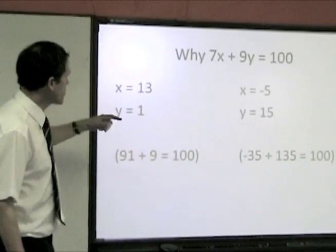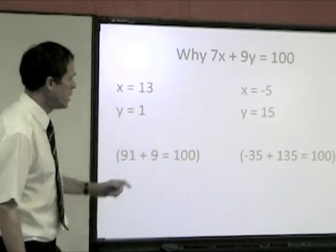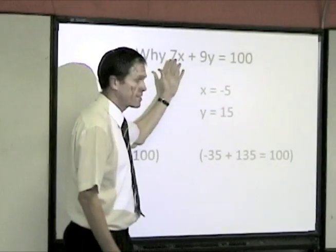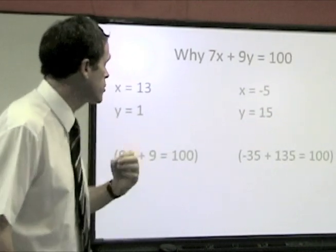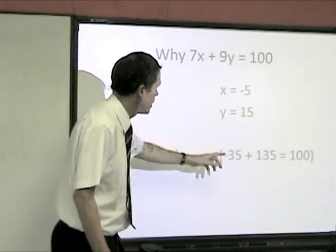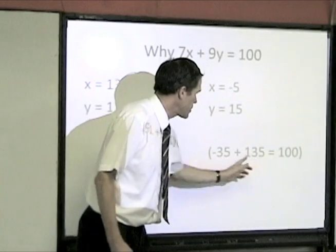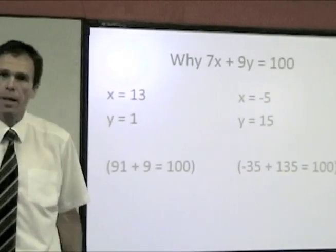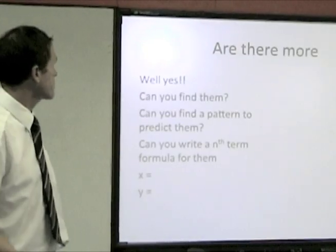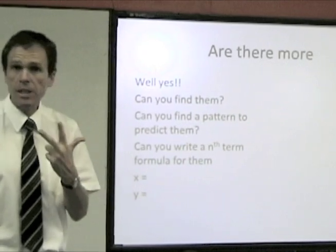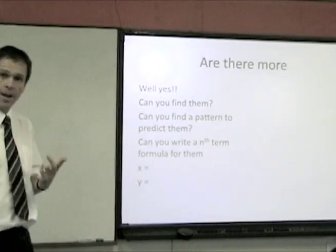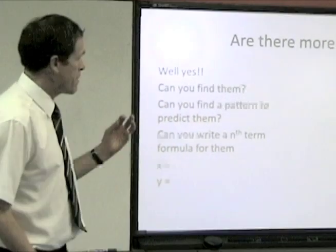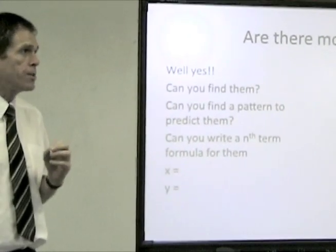So you can see that x equals 13 and y equals 1, and also x equals minus 5 and y equals 15 are where 7x plus 9y is equal to 100. And we can find these solutions by looking at these multiples here. Multiple of 7 and multiple of 9 which add together to make 100. Are there more? Well we've found 3 so far. And there are more. Can you find them? Well you need to go through and you need to look for them. However, we aren't going to continue this particular investigation.